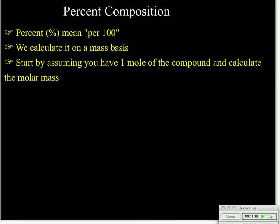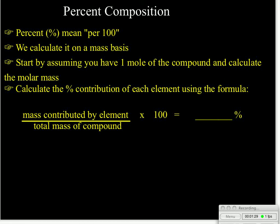So how you do it is first of all you would start by assuming that you have 1 mole of the compound and you calculate the molar mass. Once you've calculated the molar mass you're going to figure out what each element contributed to the total, and you're going to use this formula. You're going to take the mass contributed by the element divided by the total mass of the compound times 100, and that will give the percentage due to that particular element.